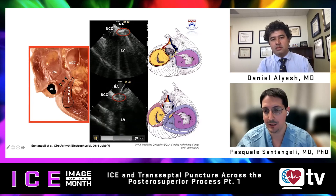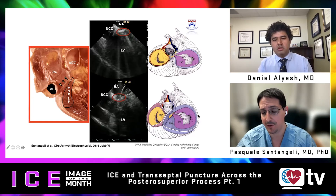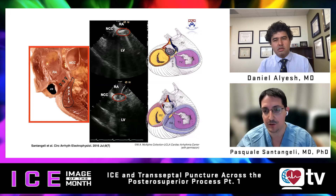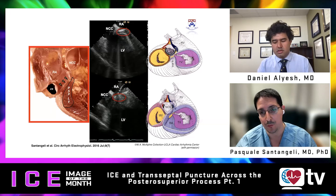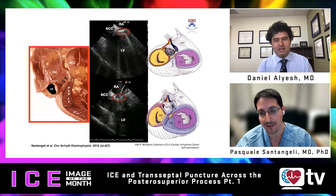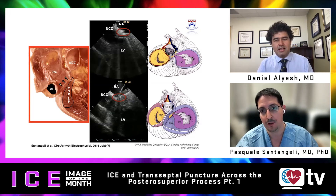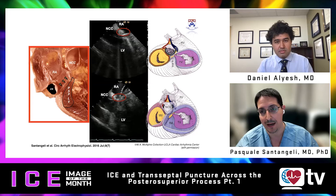ICE is fundamental in this area because there is anatomic variability between patients, and other imaging modalities — including fluoroscopy and CT reconstruction with integration — are not as good as intracardiac echo here. When you advance your probe into the right atrium and clock it slightly, you will see a portion of the left ventricle right outside the coronary sinus — the inferior septal process of the left ventricle — exactly as in the case we showed before.